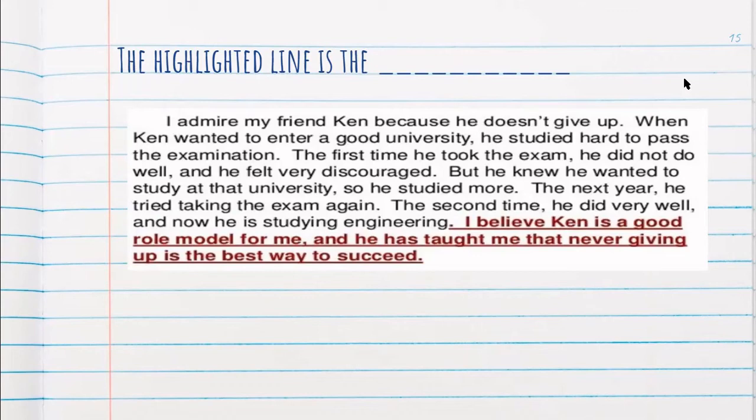The first topic sentence is 'I admire my Ken because he doesn't give up.' And the concluding sentence is 'I believe Ken is a good role model for me, and he has taught me that never giving up is the best way to succeed.' These two sentences reflect on each other.